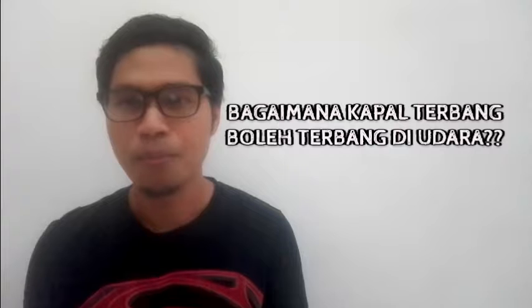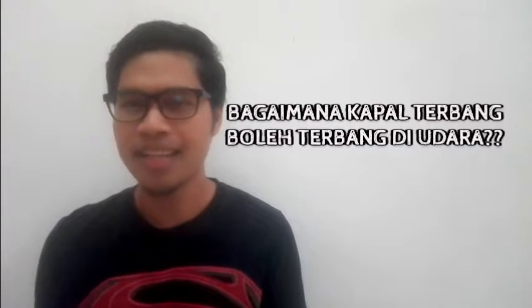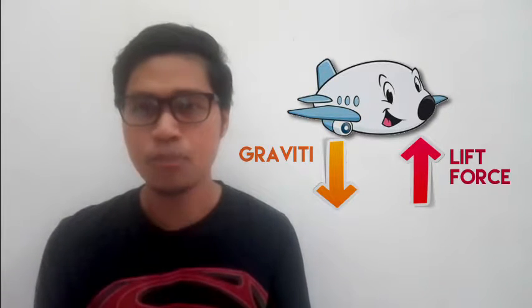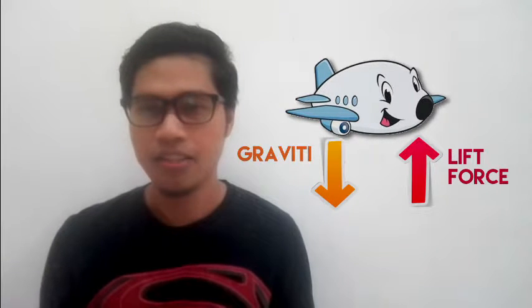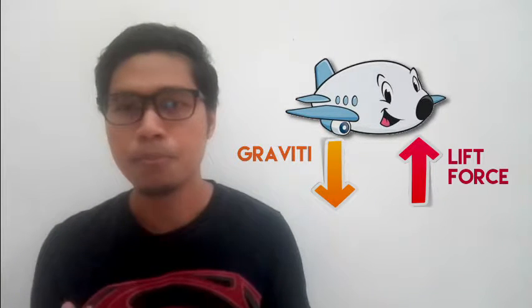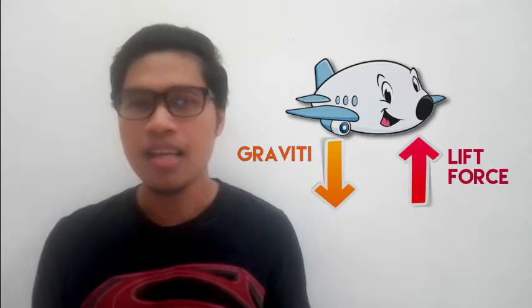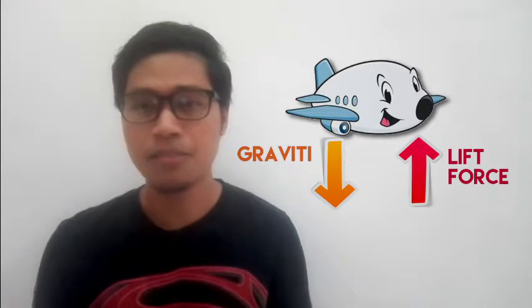Sebuah kapal terbang boleh terbang di atas udara adalah kerana satu faktor yang sangat penting iaitu keseimbangan daya. Apabila ia terbang, terdapat satu daya yang bertindak ke atas dan daya ini disebut sebagai lift force. Dan lift force inilah yang menimbangi berat dan daya graviti yang bertindak ke atas kapal terbang itu.